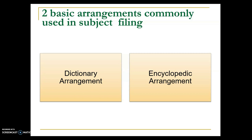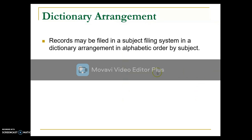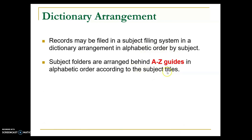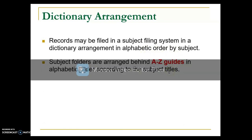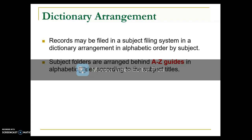There are two basic arrangements commonly used in the subject filing method: the dictionary arrangement and the encyclopedic arrangement. In the dictionary arrangement, records are filed using alphabetical order by subject, using subject folders arranged behind guides A through Z in alphabetical sequence.